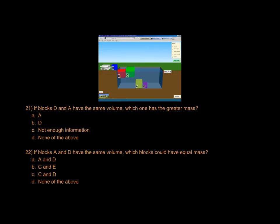If D and A have the same volume, which one must have the greater mass? D is floating, A sank, which means that A has a higher density. So if they have the same volume, as the question states, then A must have a greater mass, otherwise it would also be floating.